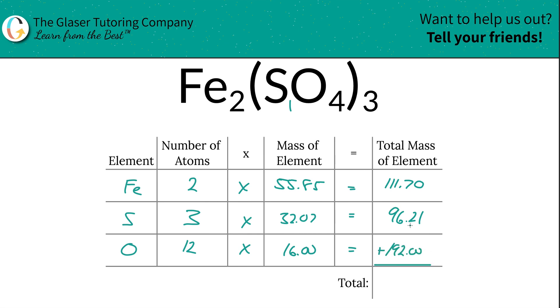So then to find the total mass of the entire compound, guess what we've got to do? Just add up all the total mass of each element. So this is going to work out to be 399.91, and the units here are in terms of AMU because we're dealing with molecular mass. So that's all there is to it. Now you know how to find the molecular mass of iron 3 sulfate.